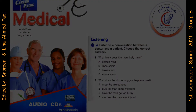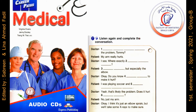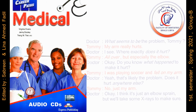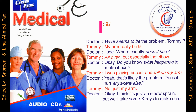Exercises 6 and 7, page 11. What seems to be the problem, Tommy? My arm really hurts. I see. Where exactly does it hurt? All over, but especially the elbow. Okay. Do you know what happened to make it hurt? I was playing soccer and fell on my arm. Yeah, that's likely the problem. Does it hurt anywhere else? No, just my arm. Okay, I think it's just an elbow sprain, but we'll take some x-rays to make sure.